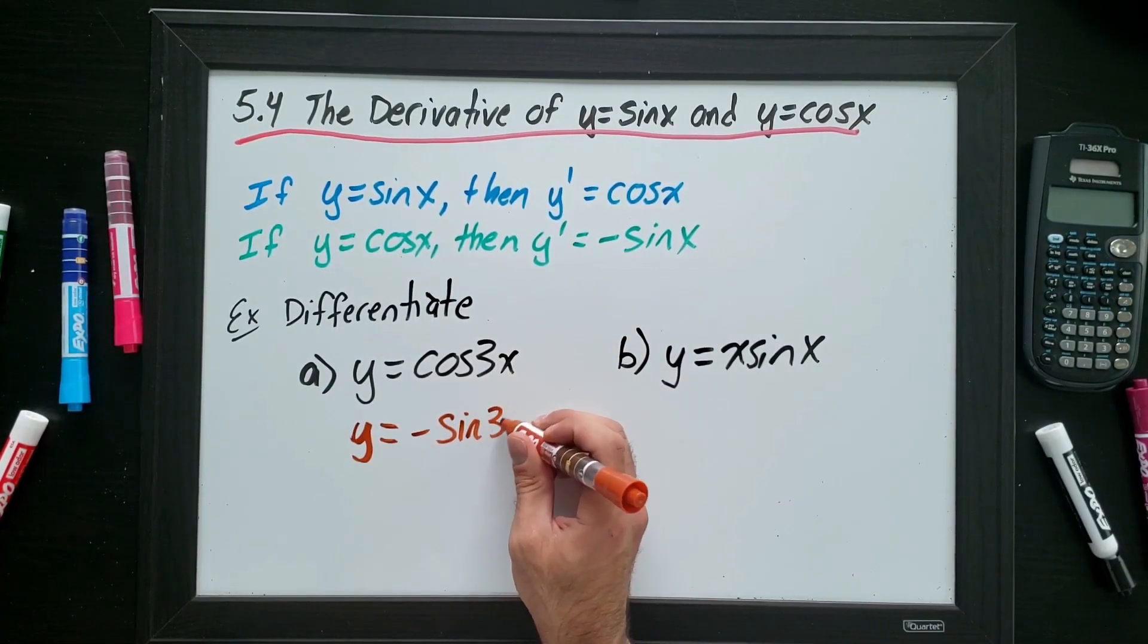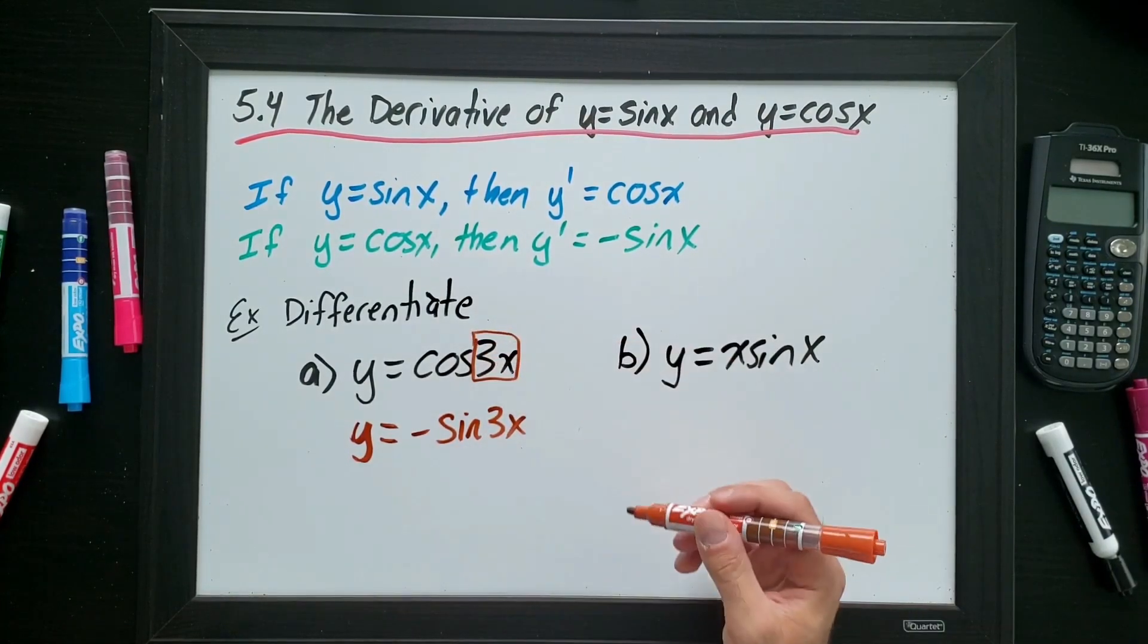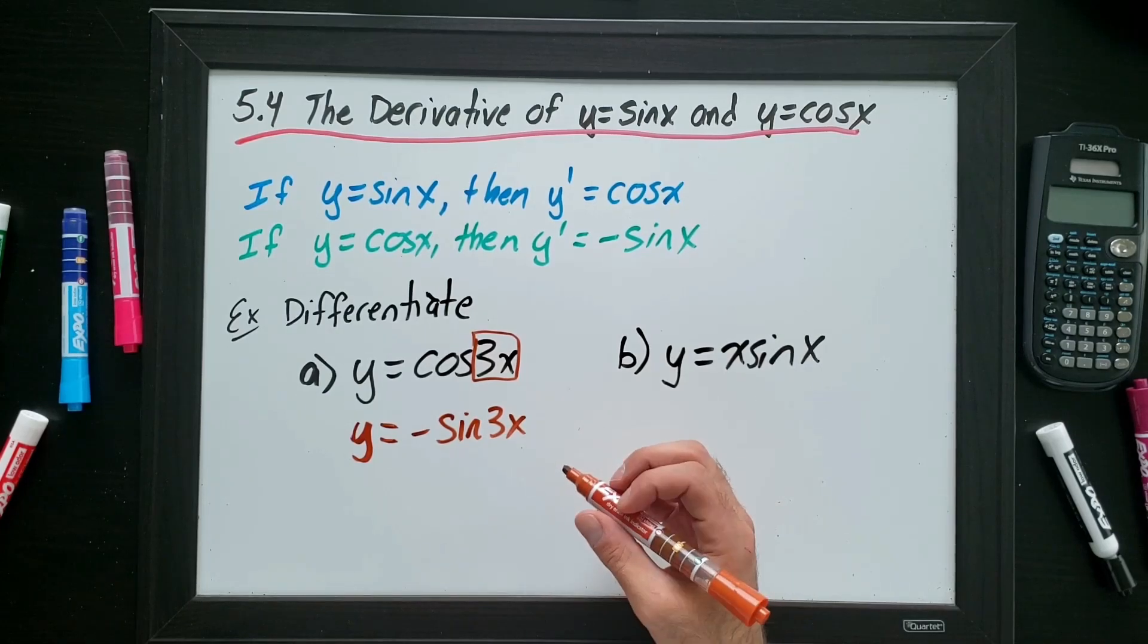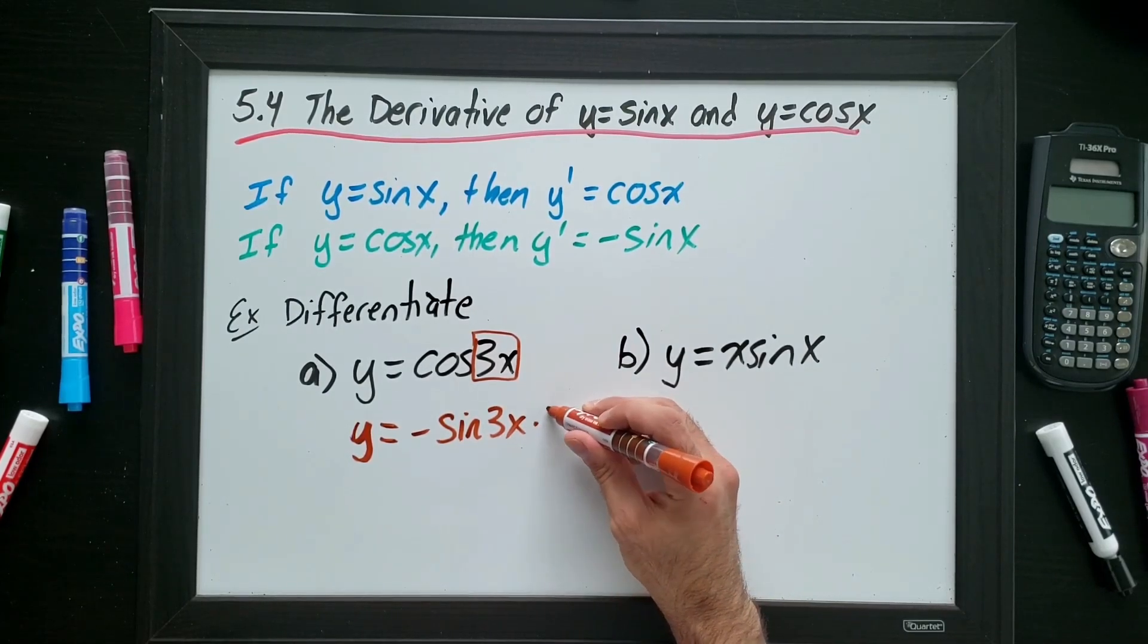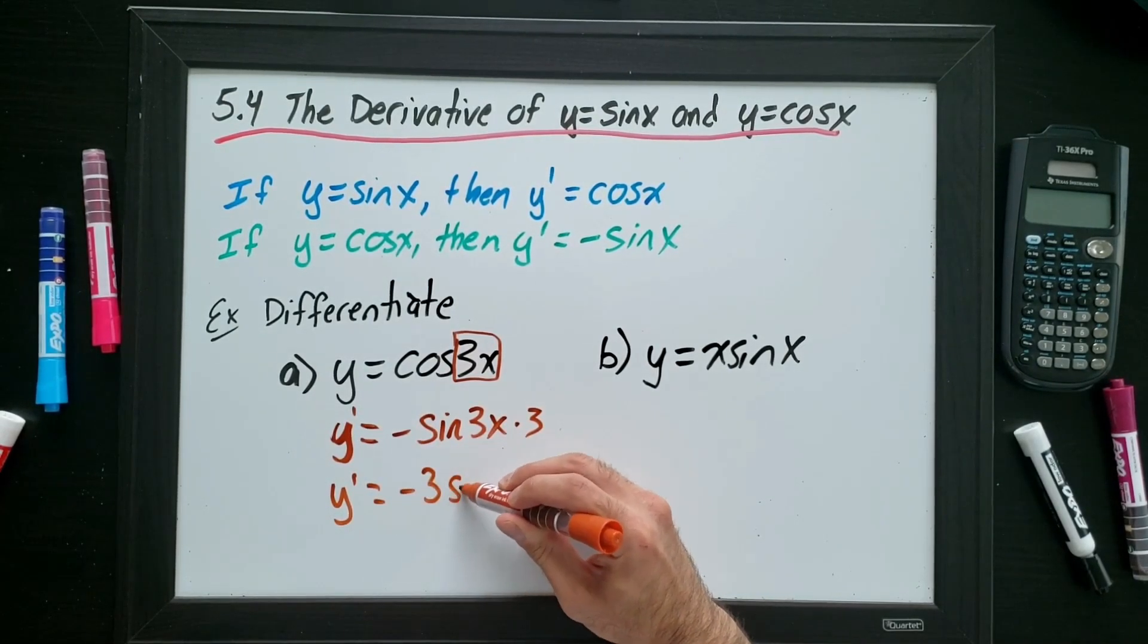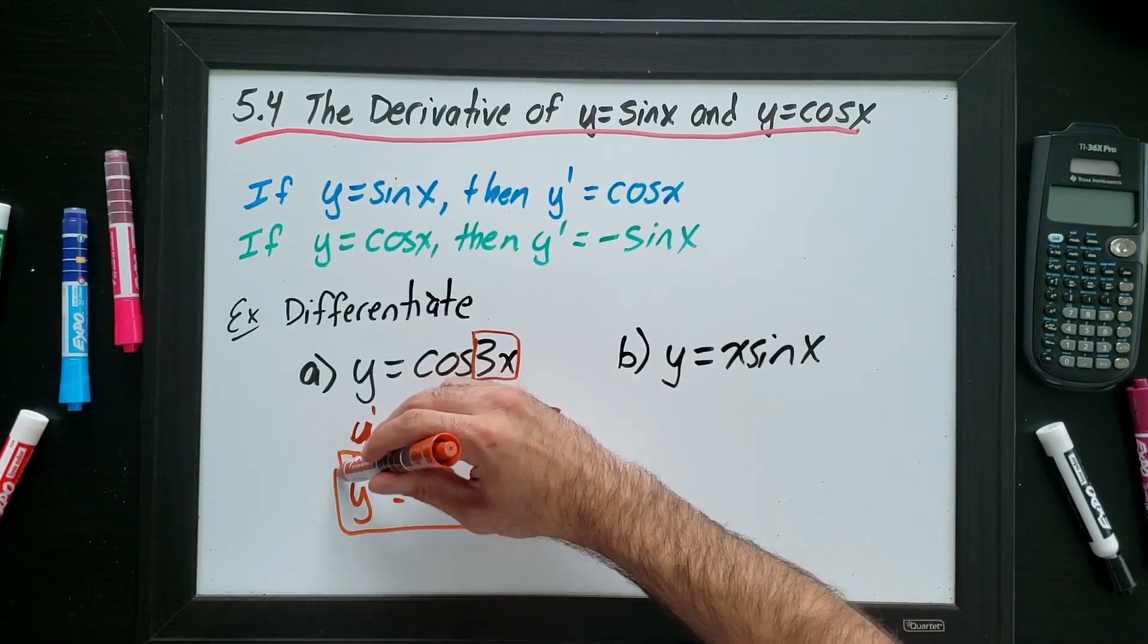But just like every function, inside the function, we have to find the derivative. We always have to use chain rule. Do not let that elude you. So this is just times 3. So I can rewrite this. Sorry, this is prime. Negative 3 sine of 3x. And this is my first derivative of this question.